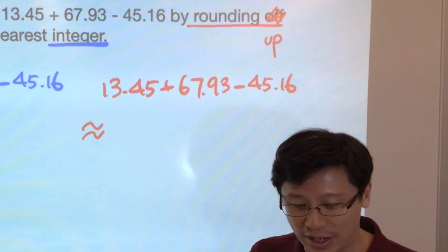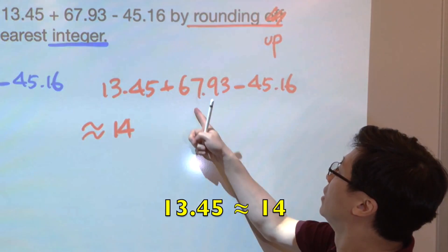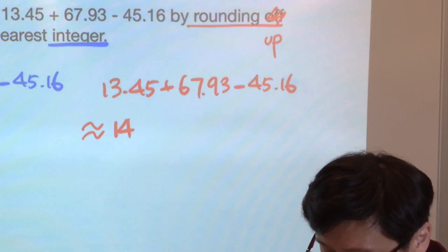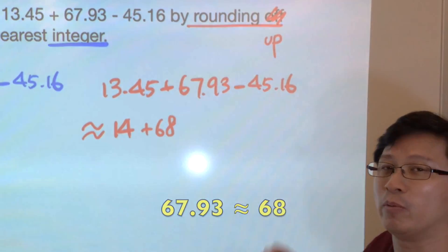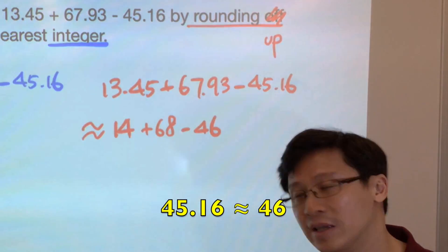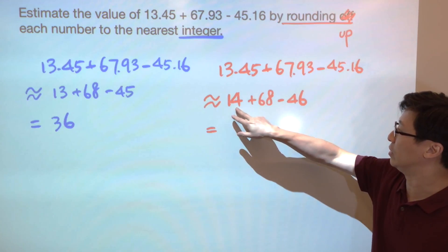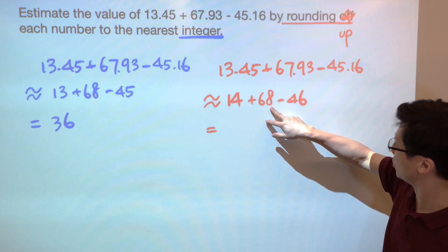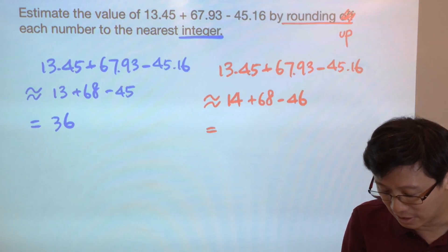And then 67.93 will become 68, minus 45.16 will give minus 46. Every number is up, therefore 14 plus 68 gives 82, minus 46. It happens that they give the same number, 36.